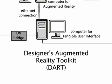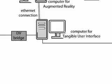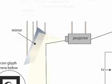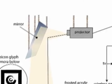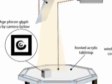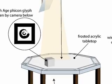Graphic overlays are correlated to the object's relative position and sent out to an overhead LCD projector for display on the tabletop and over the tracked objects.